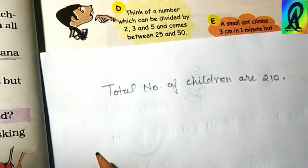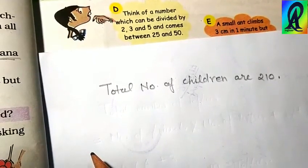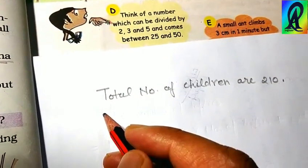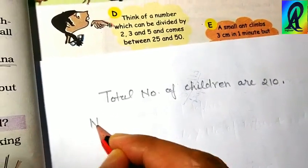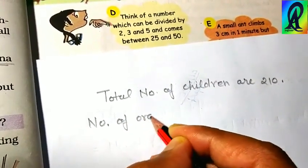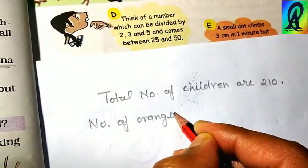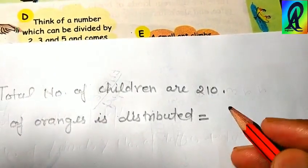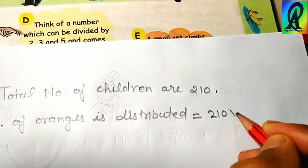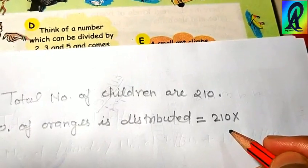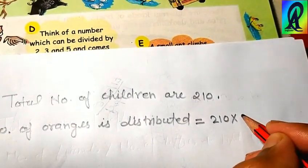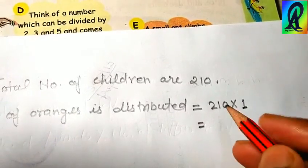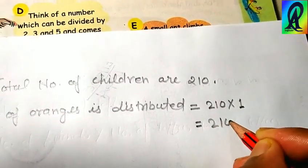Each child is given one orange, so the number of oranges distributed equals total children, which is 210, multiplied by 1. So total oranges distributed = 210.